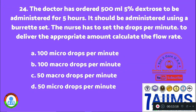Question 24: The doctor has ordered 500 ml of 5% dextrose to be administered over 5 hours using a burette set. Calculate the flow rate. Option A: 100 micro drops per minute. Option B: 100 macro drops per minute. Option C: 50 macro drops per minute. Option D: 50 micro drops per minute. The right answer is Option A, 100 micro drops per minute.